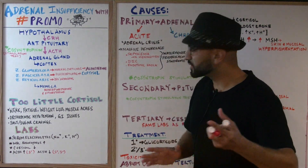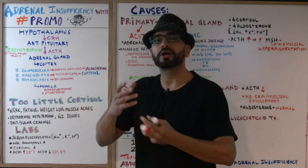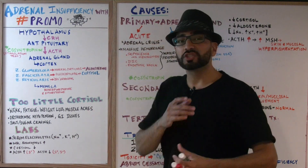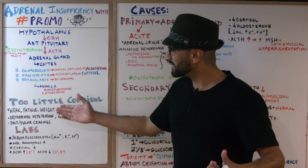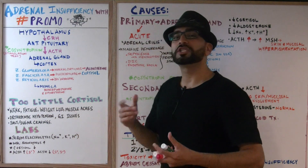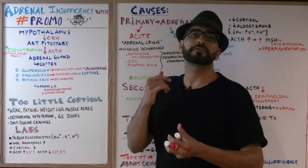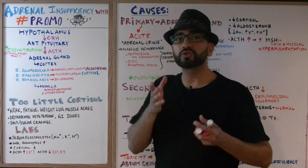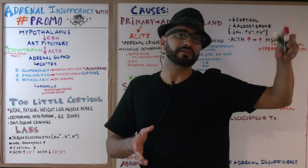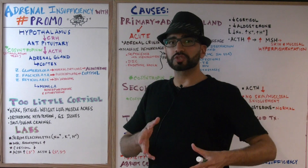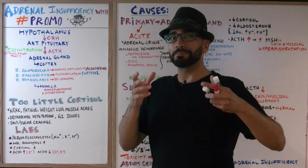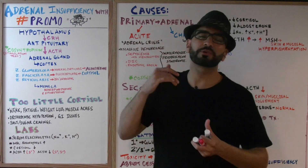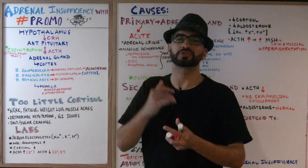In today's lecture, we're looking at what happens when there's too little cortisol — adrenal insufficiency. The patient is going to be very weak, exhibit weight loss with anorexia, lots of fatigue, muscle aches, and orthostatic hypotension. That's the opposite of last week, when too much cortisol caused hypertension. There are also GI issues, and the patient will report salt cravings as well as sugar cravings.